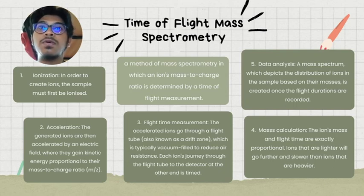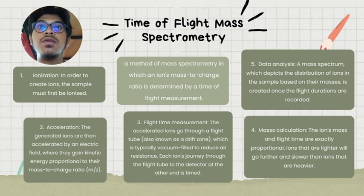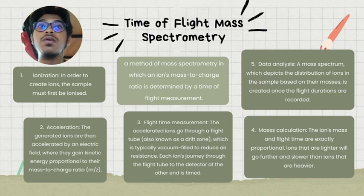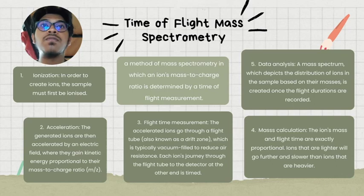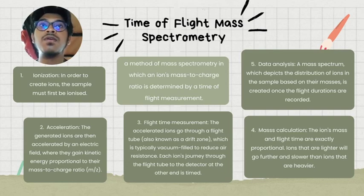The ions gain kinetic energy proportional to their mass-to-charge ratio. Third is flight measurement — the accelerated ions travel through a flight tube, also known as a drift zone, which is typically vacuum-filled to reduce air resistance. Each ion journeys through the flight tube to the detector. Fourth is mass calculation — the ion's mass and flight time are inversely proportional; ions that are lighter will travel faster than ions that are heavier. Fifth is data analysis — a mass spectrum depicting the distribution of ions based on their masses is created once the flight durations are recorded.